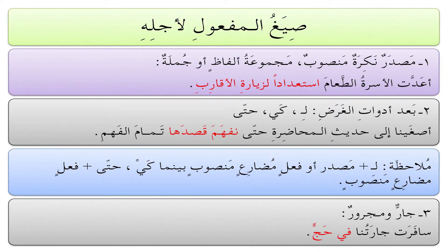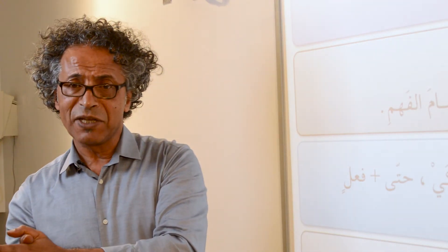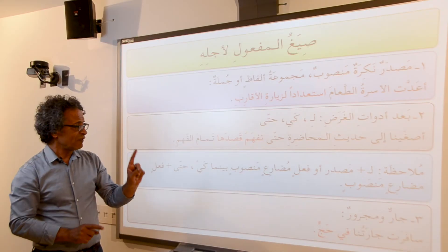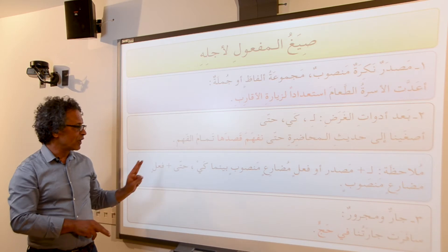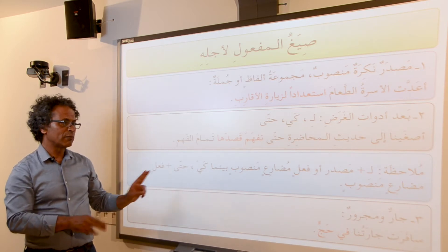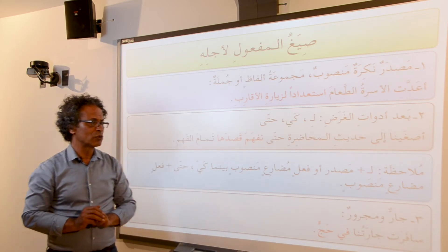ملاحظة: يمكن أن نستعمل بعد لِ إما مصدراً أو فعلاً مضارعاً منصوباً. So we can actually use a مصدر or a verb in المضارع المنصوب after لِ. However, after كي and حتى we cannot use a مصدر — we have to use a verb in المضارع المنصوب.